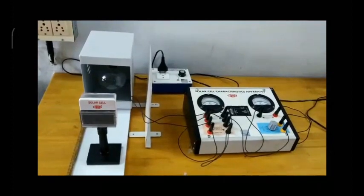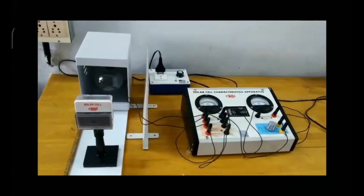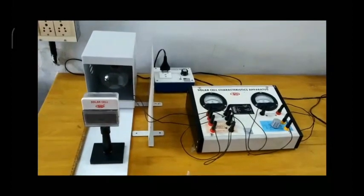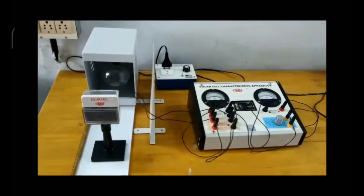When an external circuit is connected across it, the photocurrent flows through it. Let us see how to draw the IV characteristics of a solar cell using the solar IV trainer.